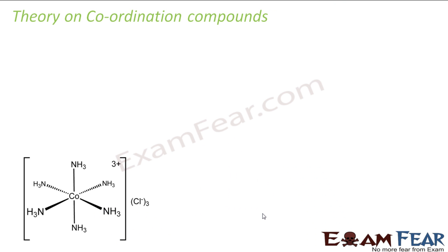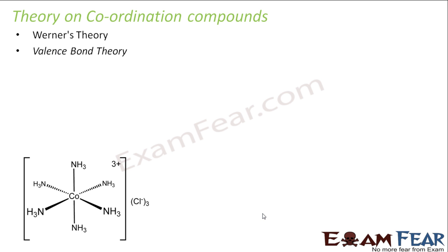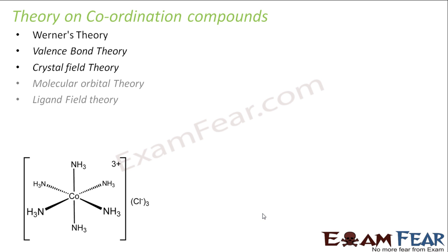Let's start the chapter on Coordination Compounds. There are various theories to explain the behavior and structure of Coordination Compounds — why they have a certain magnetic moment or why they exhibit color. The first theory is Werner's Theory, which is the basic theory. Then came Valence Bond Theory, Crystal Field Theory, Molecular Orbital Theory, Ligand Field Theory, and Electronic Theory. In this chapter, we will focus on the first three: Werner's Theory, Valence Bond Theory, and Crystal Field Theory, the latter two explaining structural details that Werner's Theory could not.